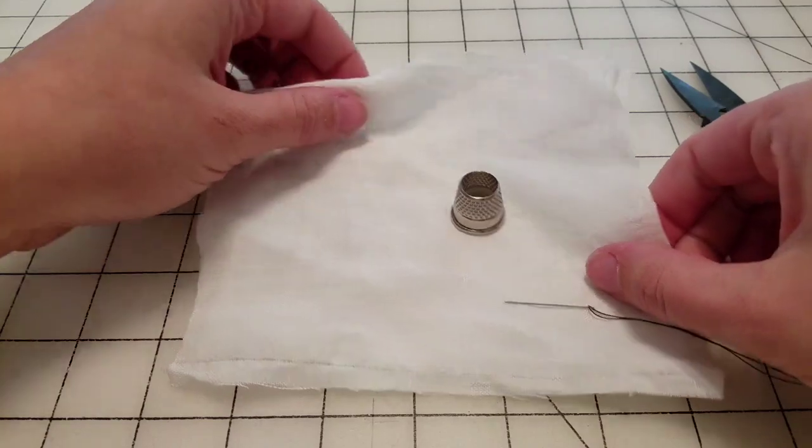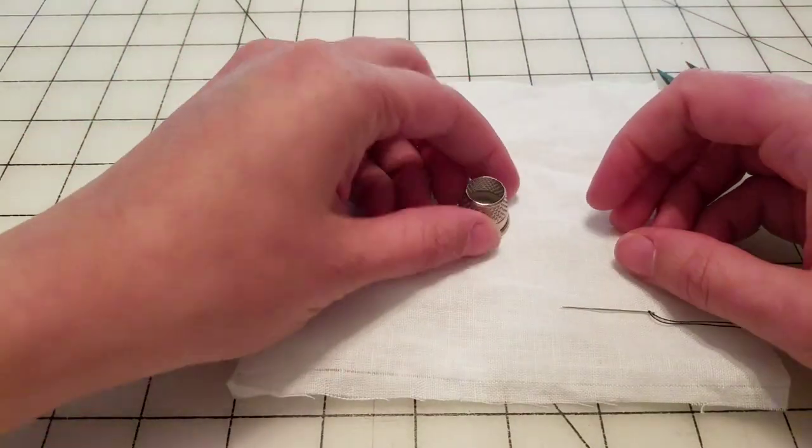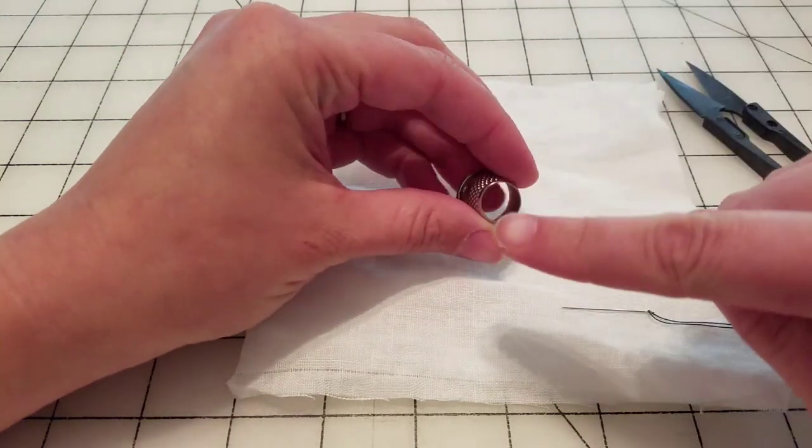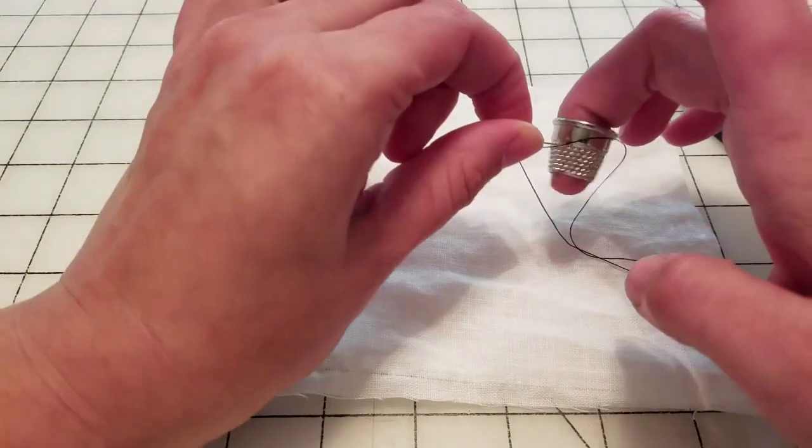We are going to do some basic stitches now that will be used on a lot of projects I'll be posting about in the future. First, this is a tailor's thimble. It's open on the top. You wear it on your middle finger and you're going to brace.